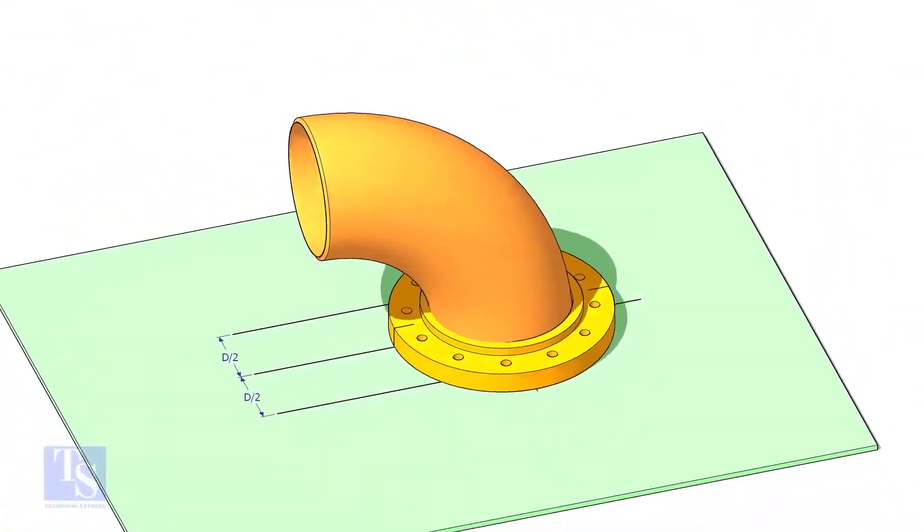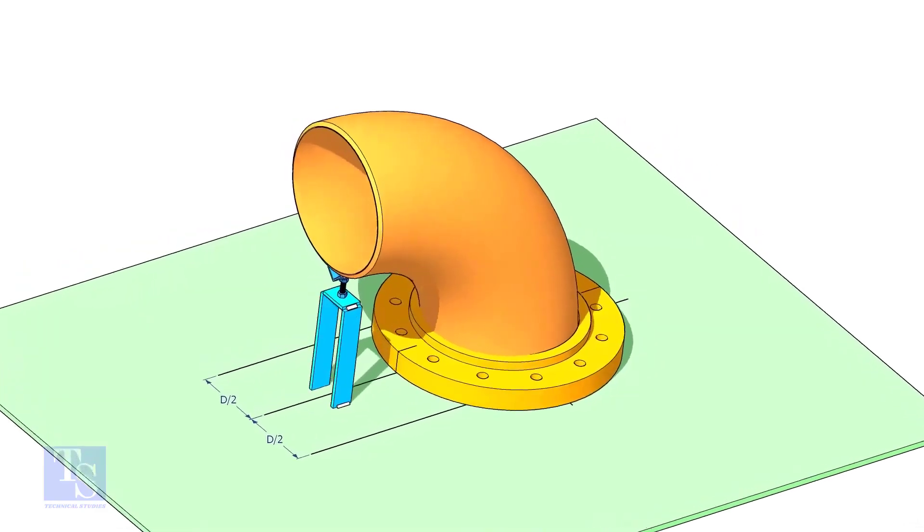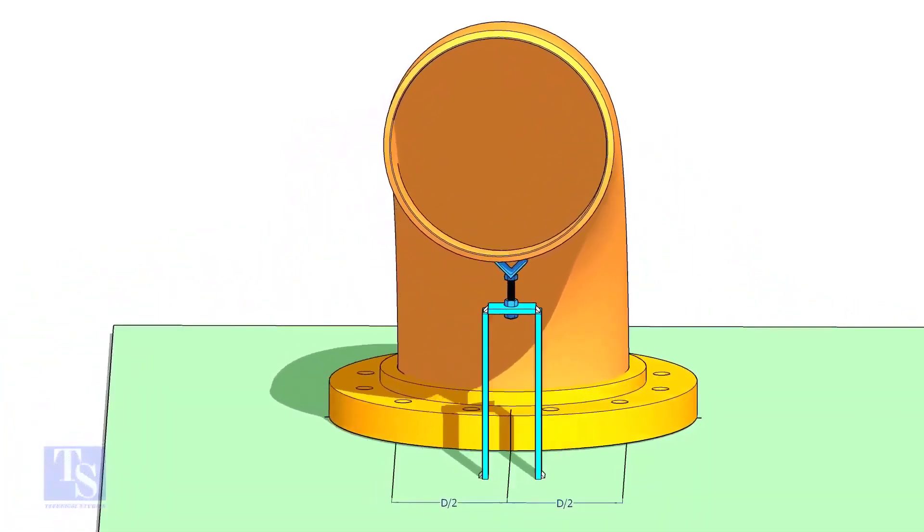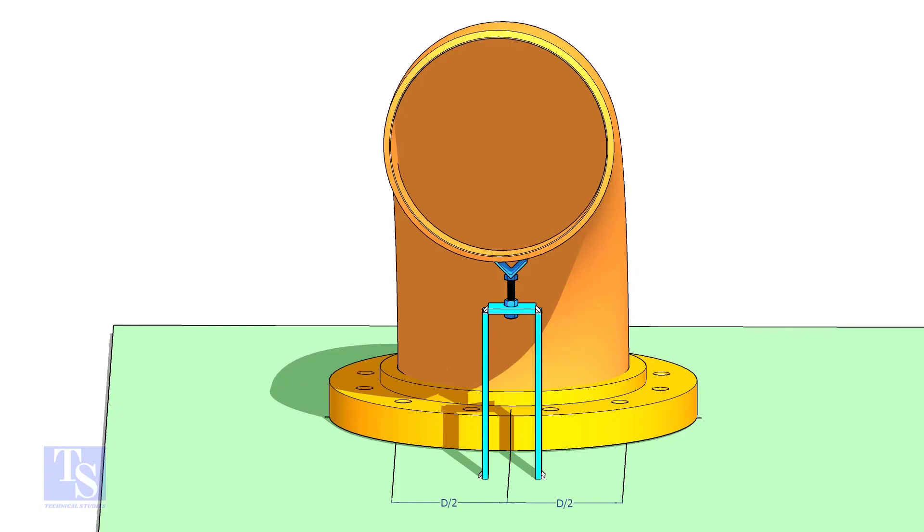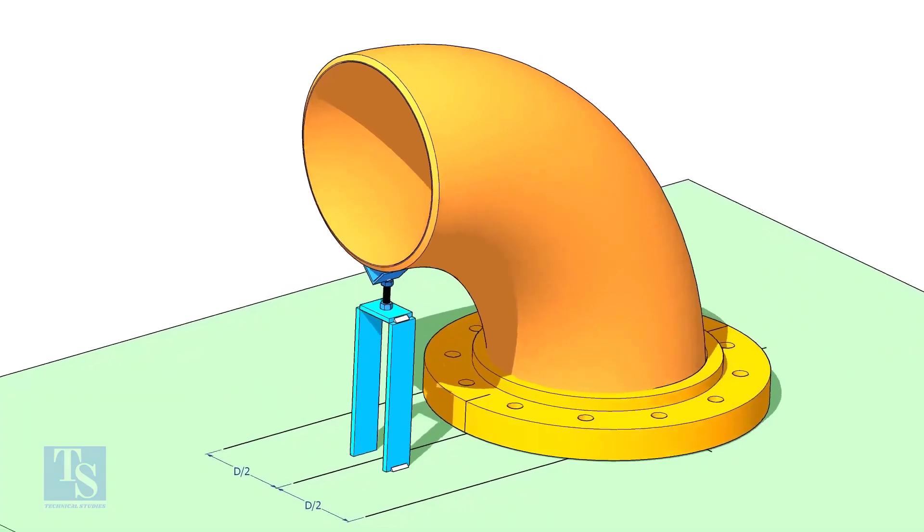Put the elbow in the flange. If required, tack weld the screw jack below the elbow face as shown. Adjust the height of the bolt and level the face of the reducer.